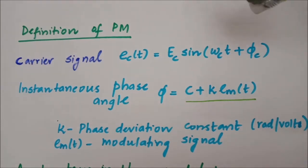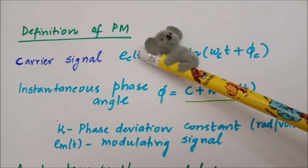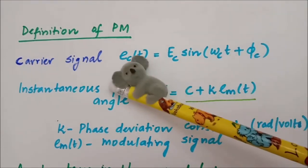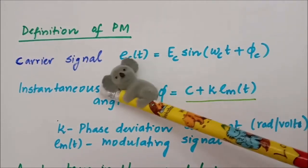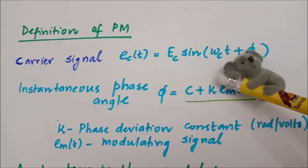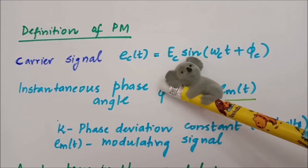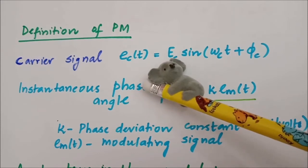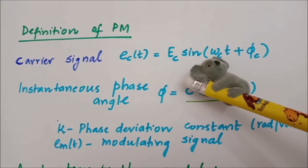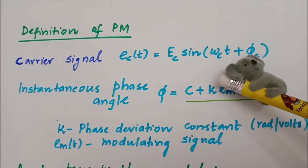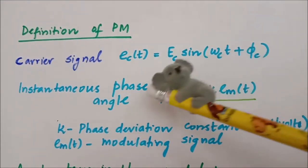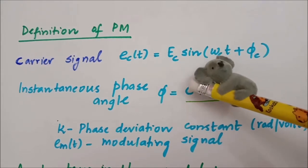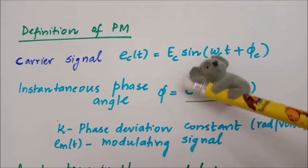Now let us try to define phase modulation. The definition of phase modulation is very similar to how we have defined AM or FM. This is the expression for a carrier signal: ec(t) is given by Ec·sin(ωc·t + φc). In any modulation technique, either the amplitude Ec, the angular frequency ωc, or the phase φc is varied with respect to the instantaneous amplitude of the modulating signal.